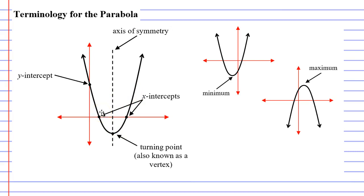We also have some other things, such as our x-intercepts, which is basically where the graph crosses the x-axis, and also our y-intercept, which is where the graph crosses the y-axis.